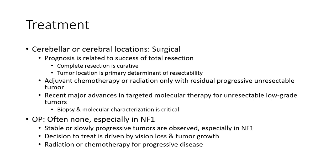For optic pathway tumors, especially in neurofibromatosis type 1, stable or slowly progressive tumors are often observed. The decision to treat is primarily driven by lesion size and tumor volume. Radiation or chemotherapy is used for progressive disease.